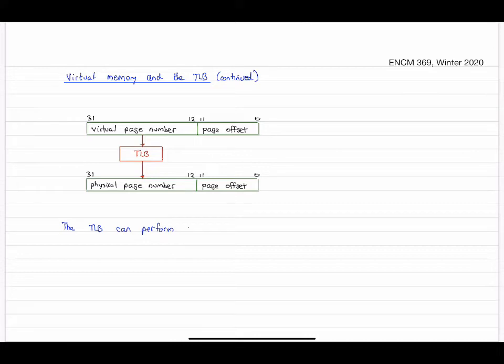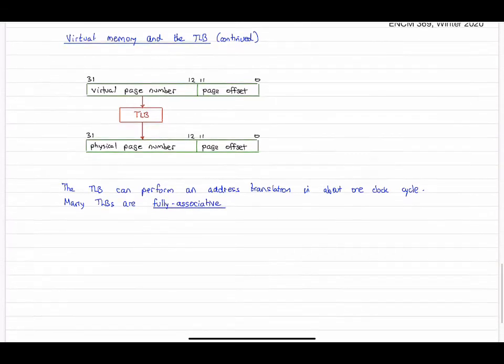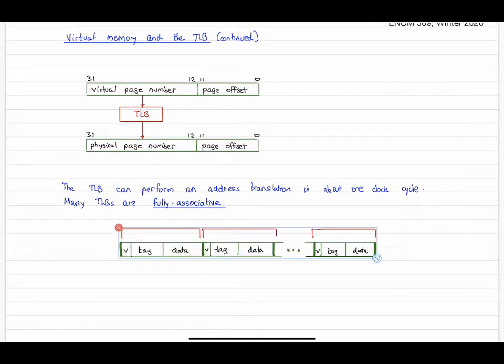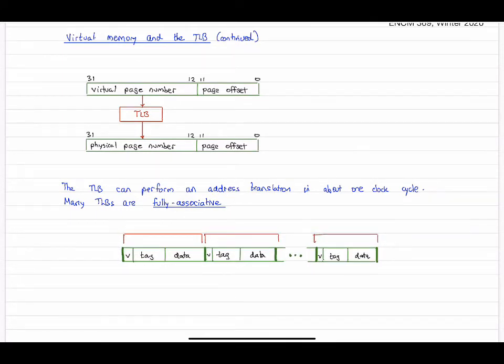As we mentioned last time, the TLB has to be extremely fast because we're making address translations on every machine instruction, certainly for the program counter but often for the data as well. To achieve this kind of speed, most TLBs are fully associative, as you talked about when talking about caches.